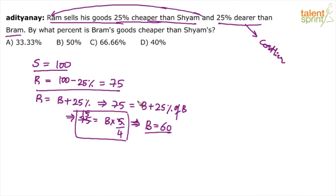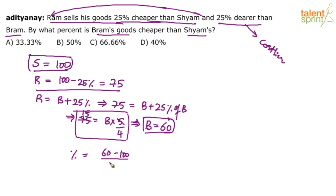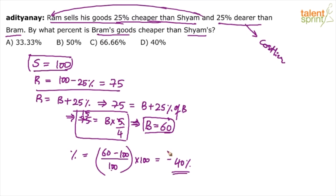So Bram's value is 60. Now he is asking us to find out by what percent is Bram's goods cheaper than Shyam's. Bram's value is 60, Shyam's value is 100. By what percentage is it cheaper? The formula is: X is what percentage more or less than Y = (X − Y) / Y. So Bram minus Shyam divided by Shyam: (60 − 100) / 100 × 100 = −40%. Minus indicates that it is cheaper. So the answer is 40% cheaper.